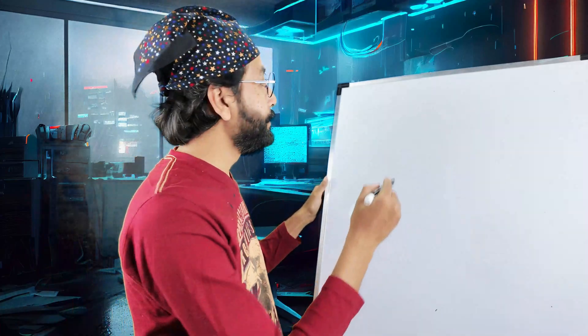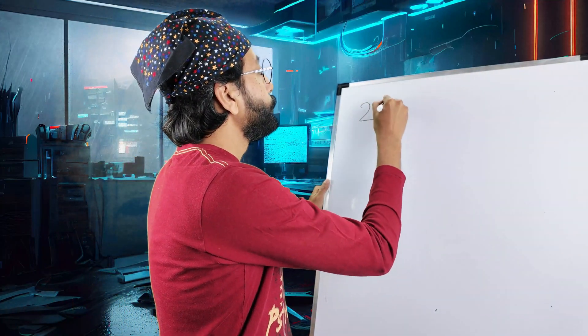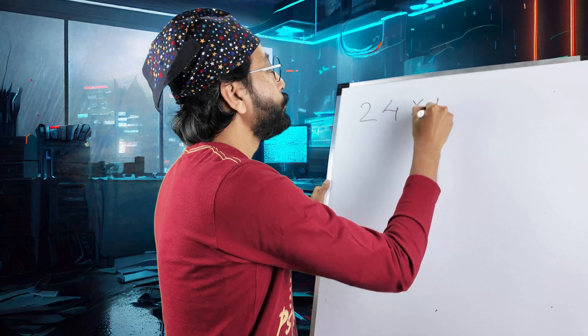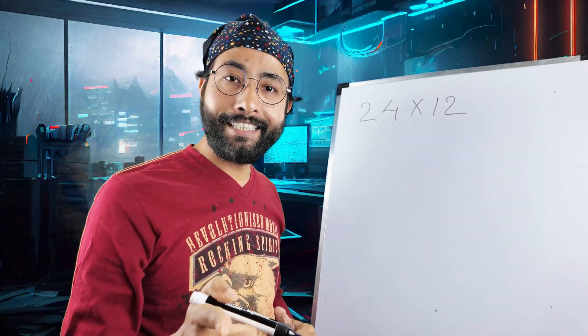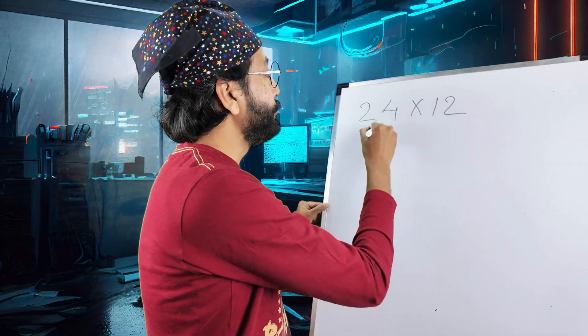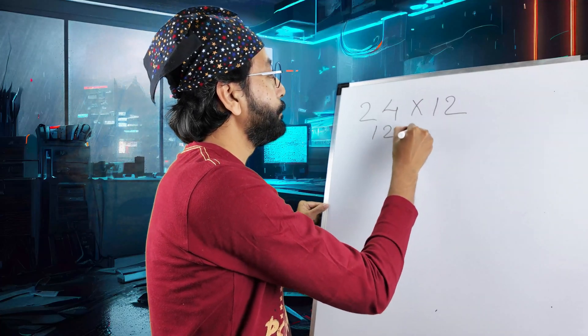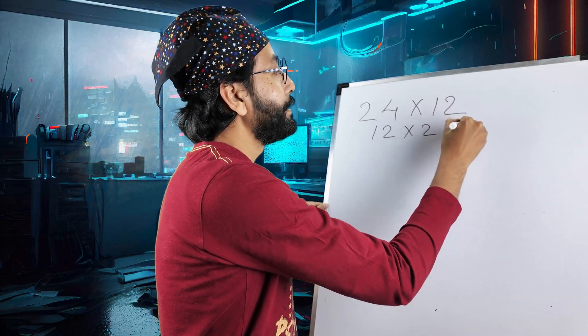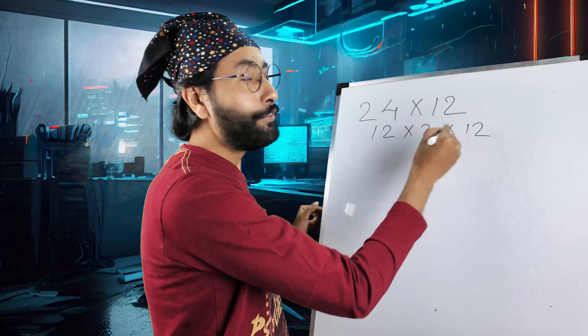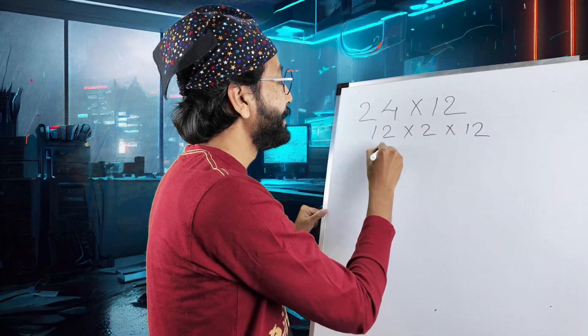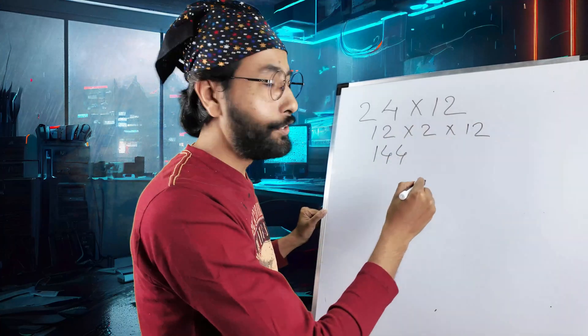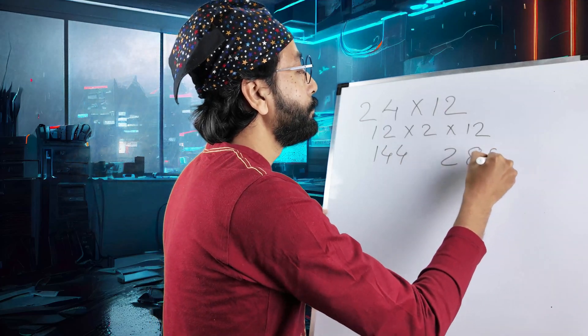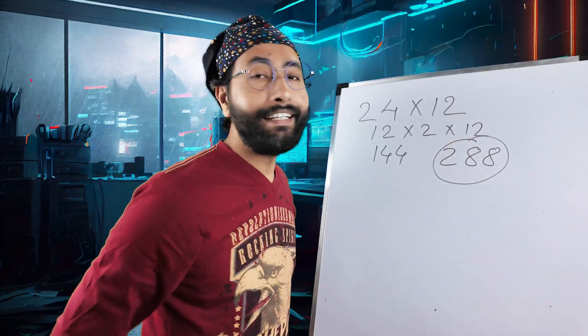Let's make it a little more difficult. 24 twelves are. You know this? 24 is 12, double of 12, right? And 12 is already there. 12 twelves are 144, right? We know this. And double of 144, 288. Even easier.